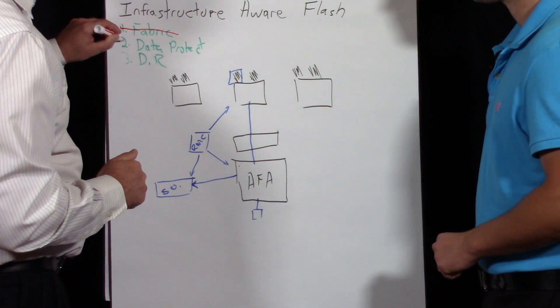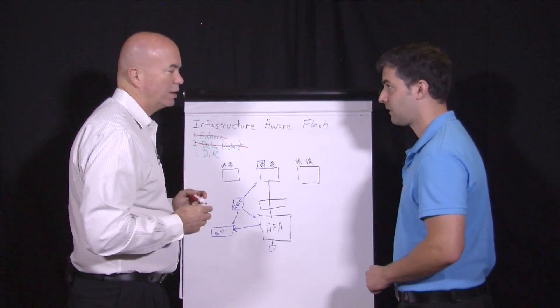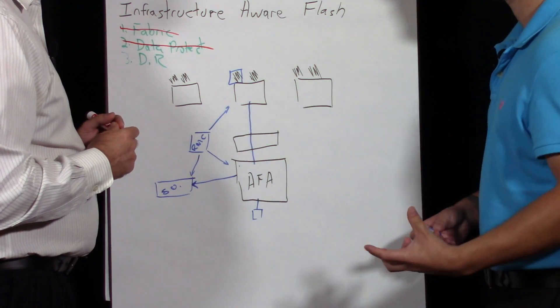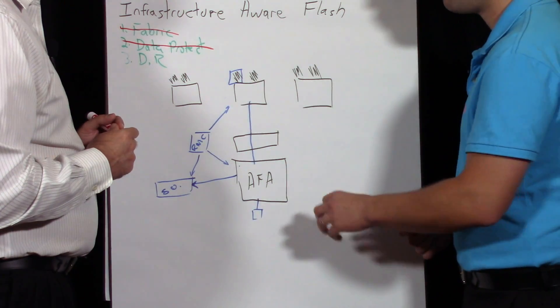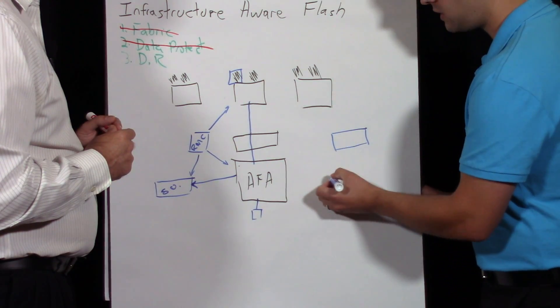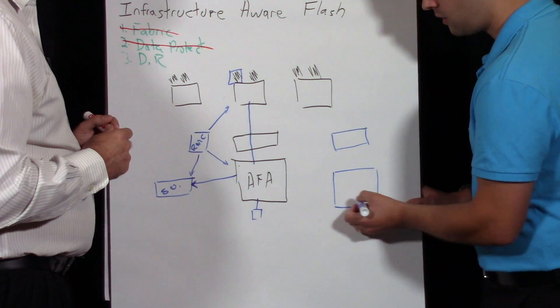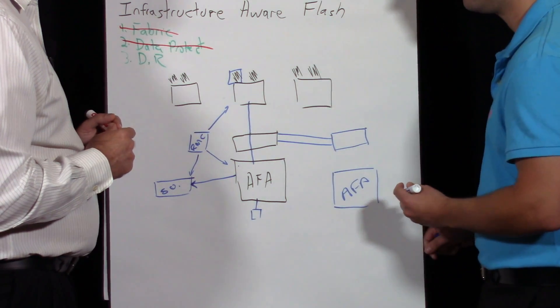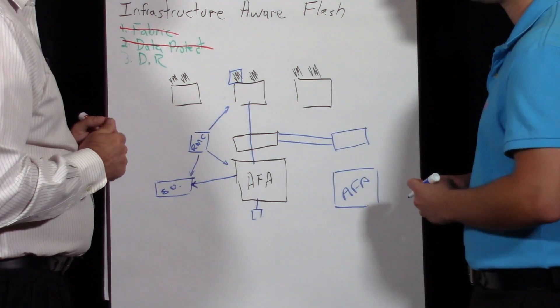That takes care of data protection. How about disaster recovery? When we're talking about consolidation, these arrays become a central point—that array has to be up all the time. You need to be protected in the event that something happens to the entire site or hosts in the environment. One way we achieve this is by creating a second site with a second all-flash array, and we stretch the fabrics across so they become a single fabric stretched across multiple locations.